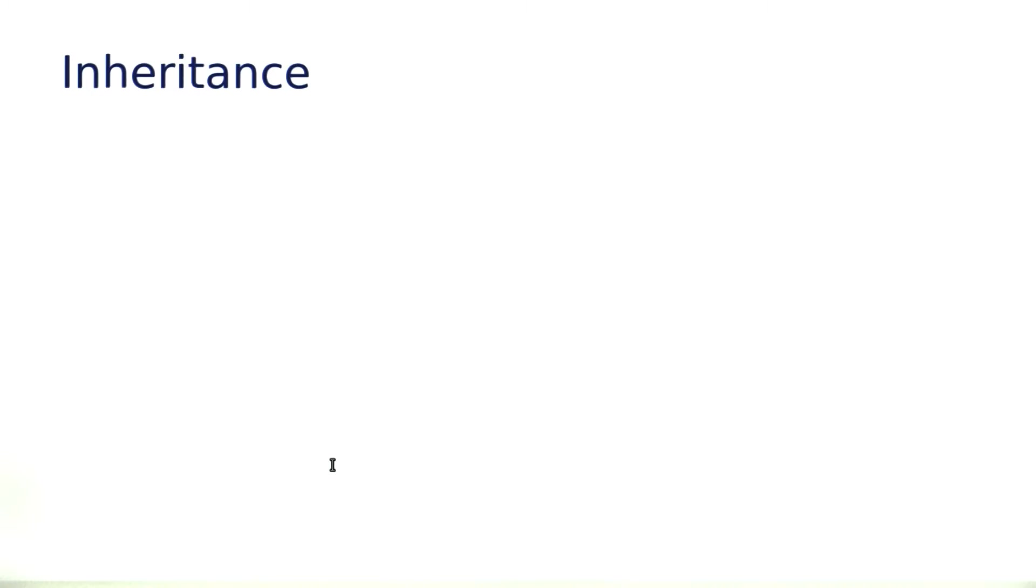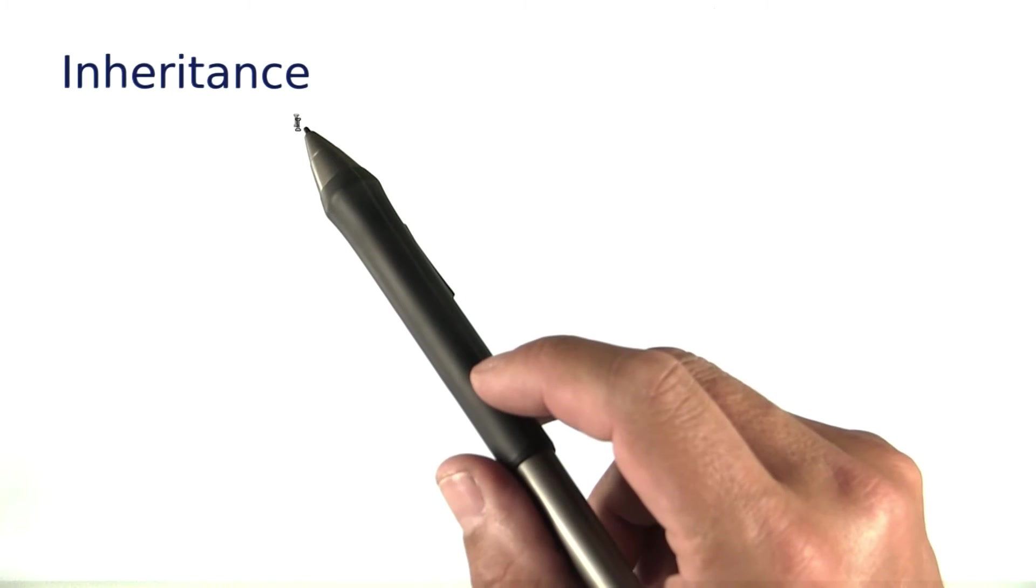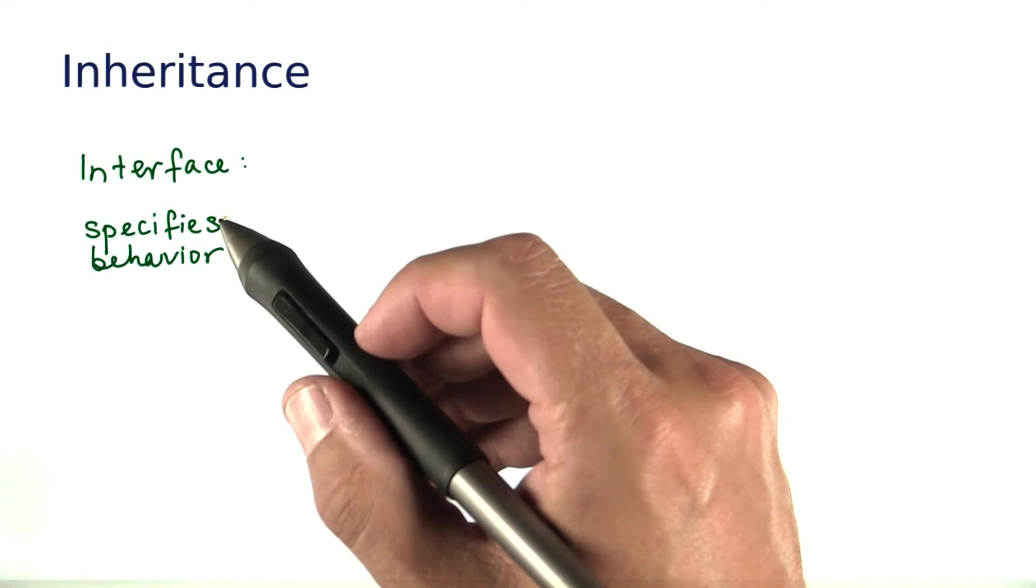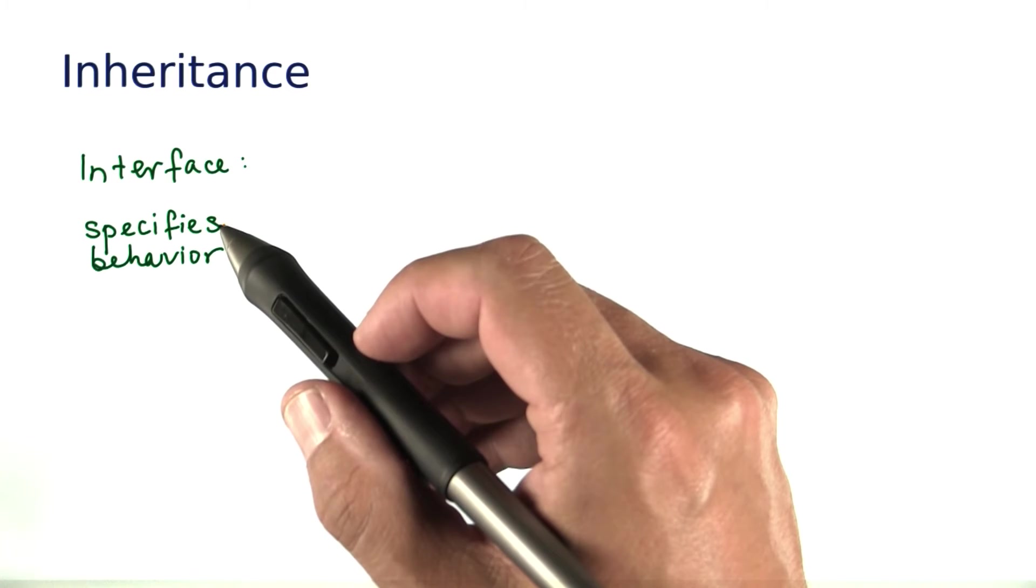We've been talking a lot about interfaces and how useful they are. Now I'd like to bring up a related topic called inheritance. An interface specifies behavior that the class implementing it should exhibit.